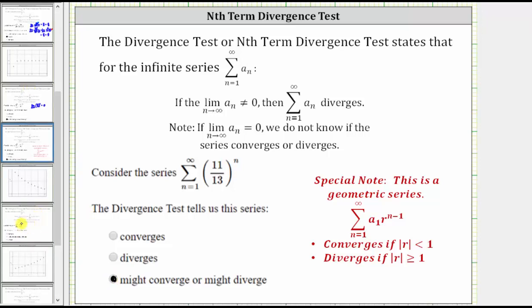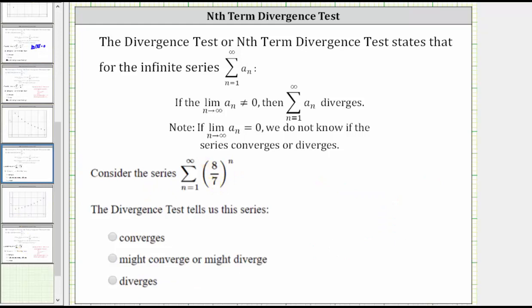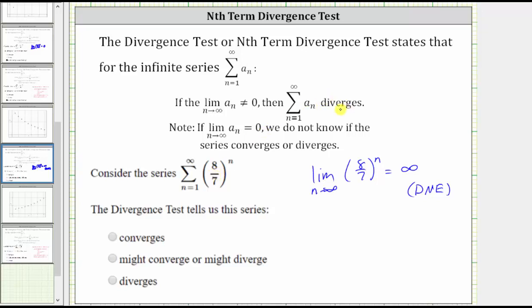Let's look at a second example — same question, different infinite series. To apply the nth term divergence test, we need to determine the limit as n approaches infinity of a sub n, which is now eight-sevenths raised to the power of n. The base of eight-sevenths is greater than one, so as n increases, we multiply by more and more factors of eight-sevenths. The values get larger and larger and approach infinity, and because the limit does not equal zero, we can conclude that the infinite series diverges.